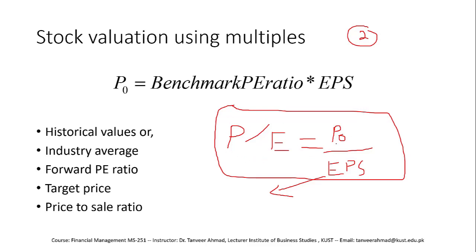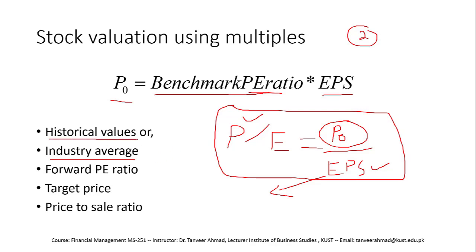If we rearrange the P/E formula, we get: P0 = Benchmark P/E ratio × EPS. We use a benchmark P/E rather than the company's own ratio because we do not know the company's current price. The benchmark can be an industry average P/E ratio or a historical P/E ratio of that specific company. For example, for Engro Fertilizer we could use its previous year's P/E ratio as the benchmark.